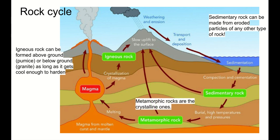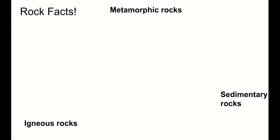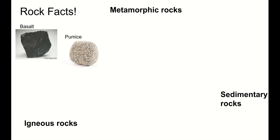The way to recognize metamorphic rock is that metamorphic rocks are the crystalline ones. Now is a good time to show you examples of each type of rock. Our first type is igneous rock. Basalt and pumice are igneous rocks that both form above the surface. Pumice gets its porous structure because it forms when magma drops directly into water — that water is so much cooler that any gases in the magma expand rapidly and form all those bubbles. Basalt also forms above ground.